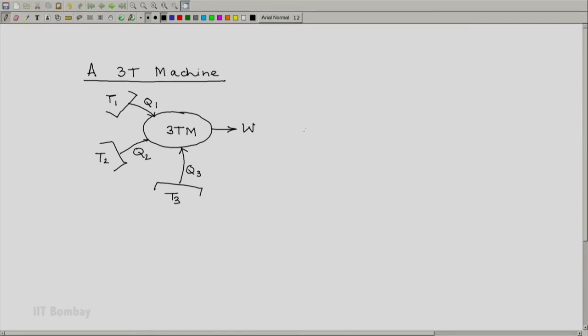I am not considering the case where one of Q1, Q2, or Q3 would be zero, because then it would be a 2T machine, not a 3T machine. Now, first thing we note: because the machine executes a cycle, we must have W equal to Q1 plus Q2 plus Q3. This is the first requirement.